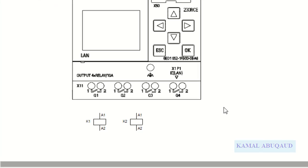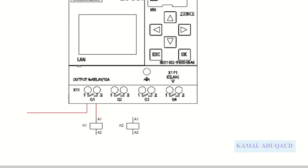To connect the relay coil to the PLC output, we connect one side of the relay coil to the PLC output terminal. The other terminal of the PLC should be connected either to live if the relay coil is an AC coil, or to the positive supply terminal if it is a DC coil. I'm assuming a DC coil, so one side is connected to the positive terminal and the other side is connected to the negative terminal.